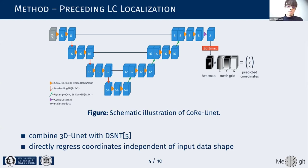Additionally, this network has the advantage that it's independent of the input's shape and size. We obtained heatmaps from this network, which turned out to be very useful as we will see later.